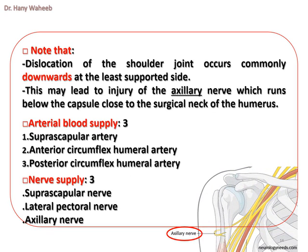Note that dislocation of the shoulder joint occurs commonly downwards at the least supported side. This may lead to injury of the axillary nerve, which runs below the capsule close to the surgical neck of the humerus. Arterial blood supply is from the suprascapular artery, the anterior circumflex humeral artery, and the posterior circumflex humeral artery.